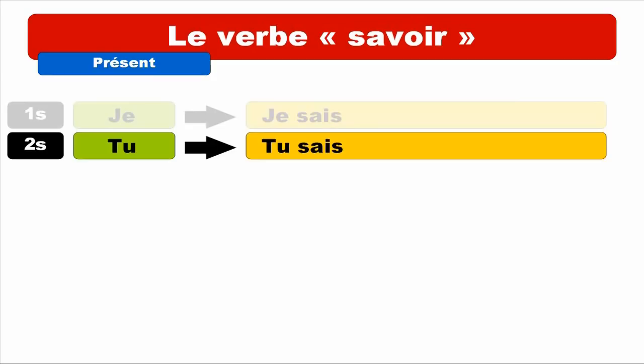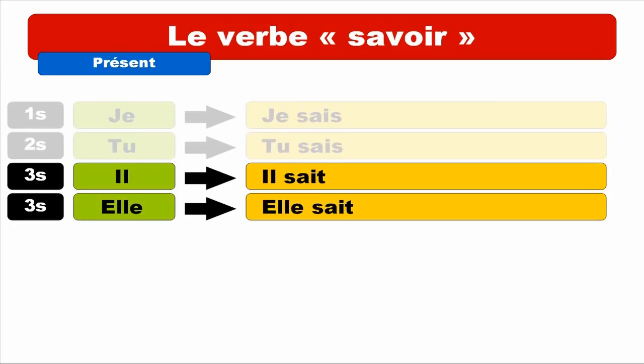Third person of the singular — IL and ELLE. And what a surprise — same form! IL SAIT. Repeat. ELLE SAIT. Repeat. So for JE, TU, IL and ELLE we've got the same form to pronounce — C'est. But keep in mind it ends with S for JE and TU, and ends with T for IL and ELLE.